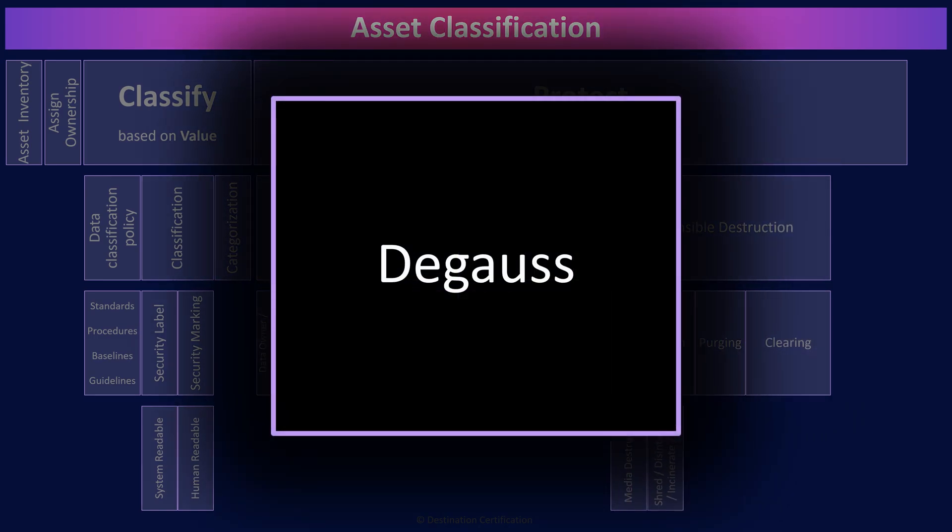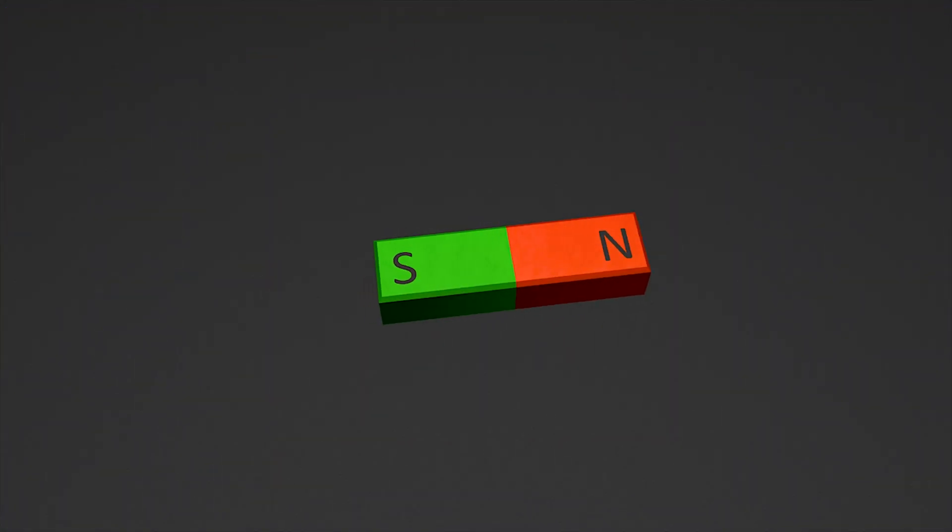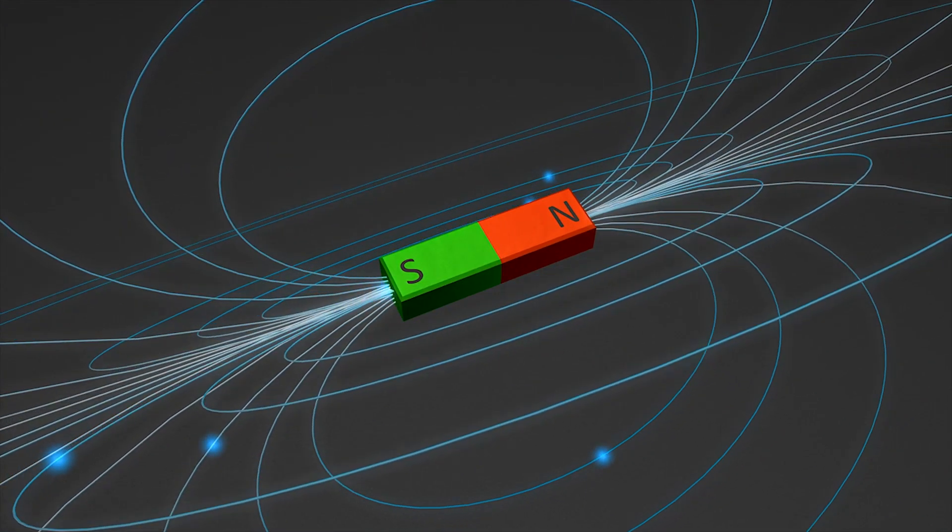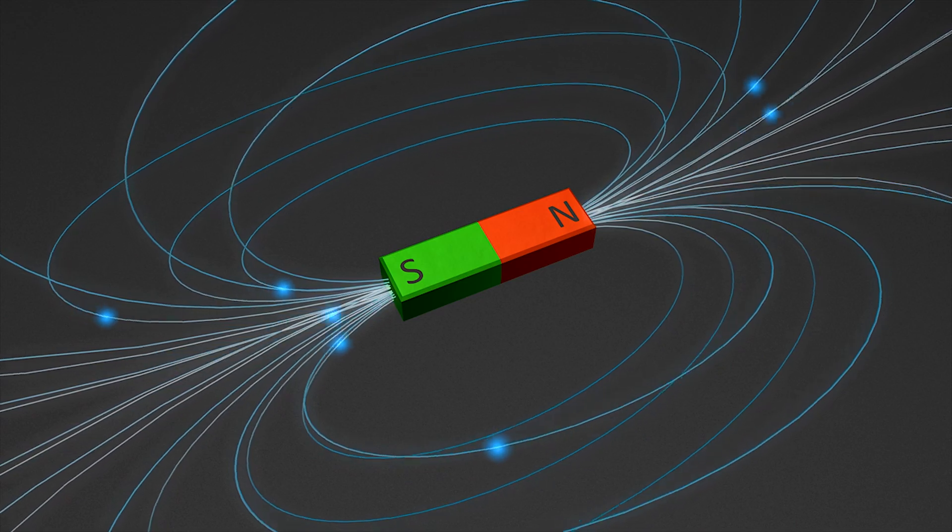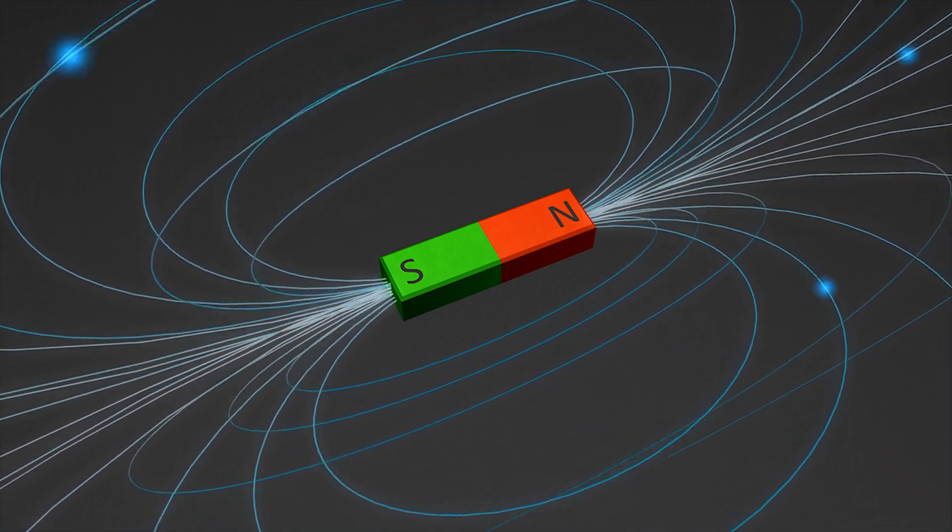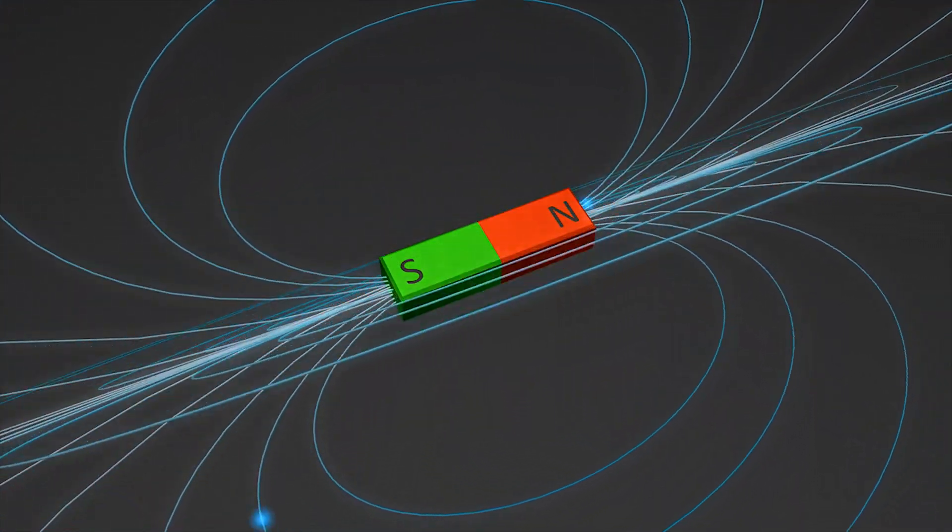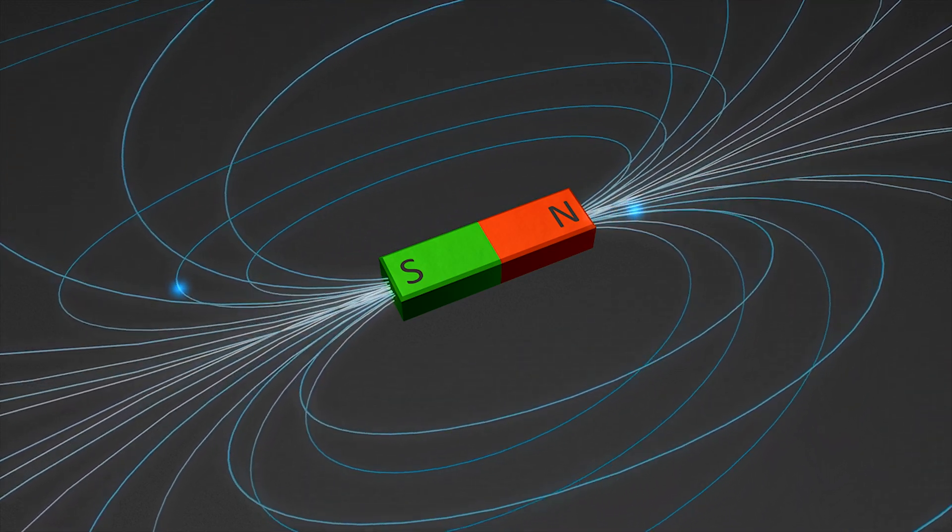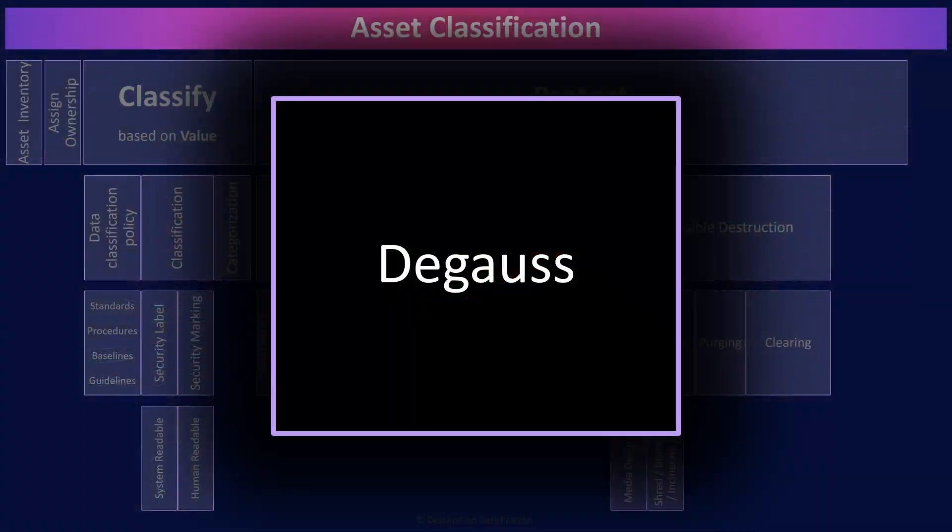Degaussing is applying a very strong magnetic field to magnetic media like hard drives or tapes. The strong magnetic field destroys the data. The reason degaussing fits between destruction and purging is because it may render the media unusable ever again, thus essentially destroying the media.